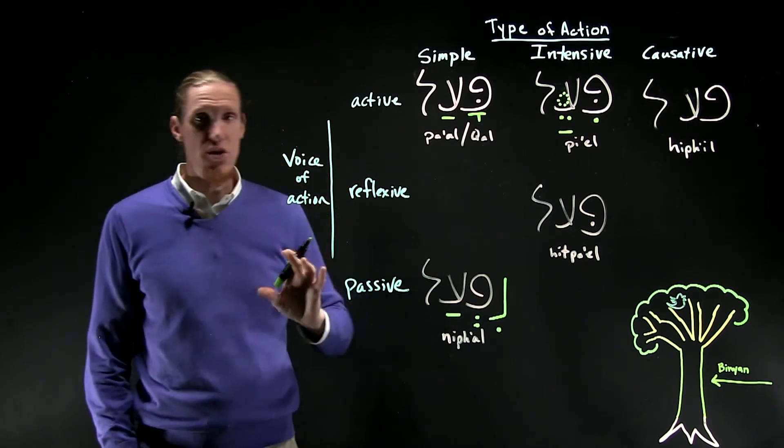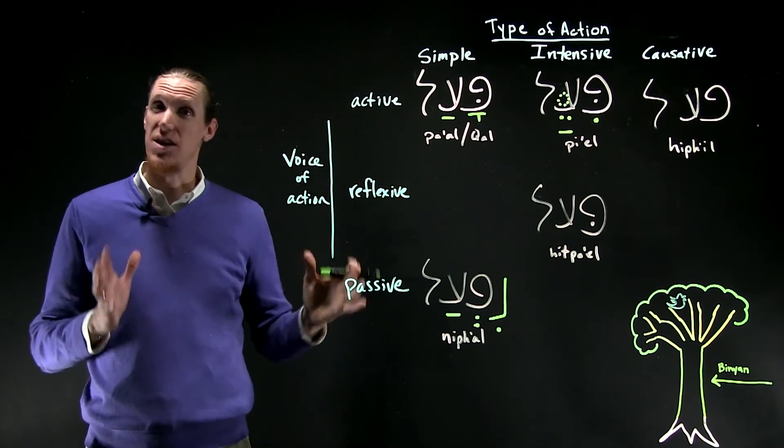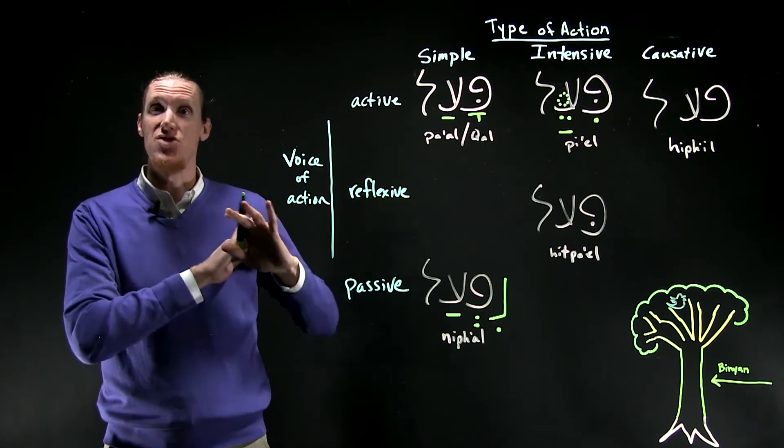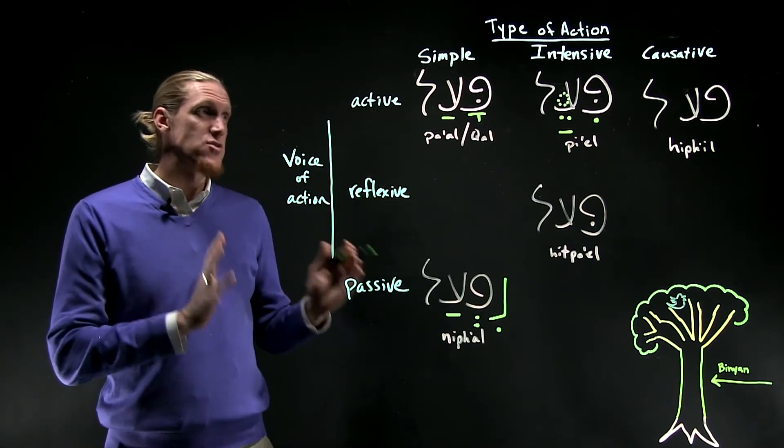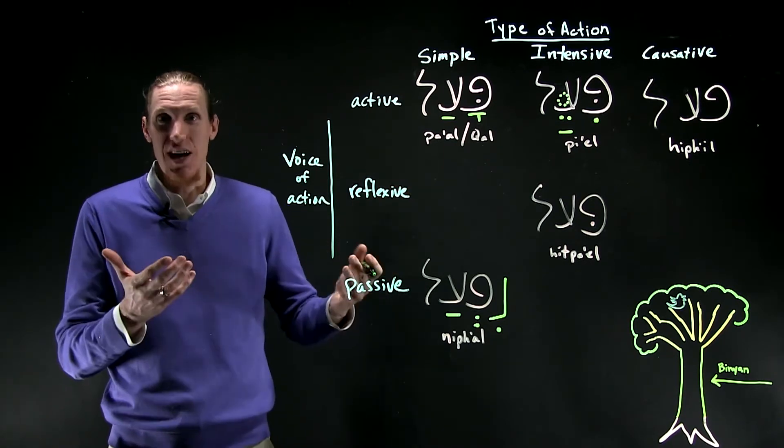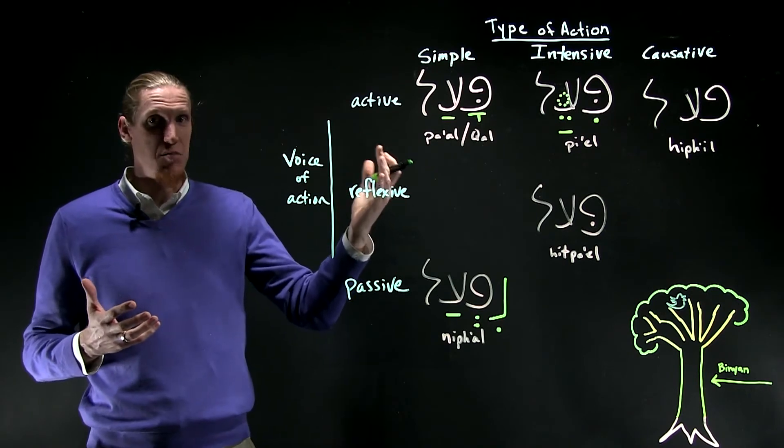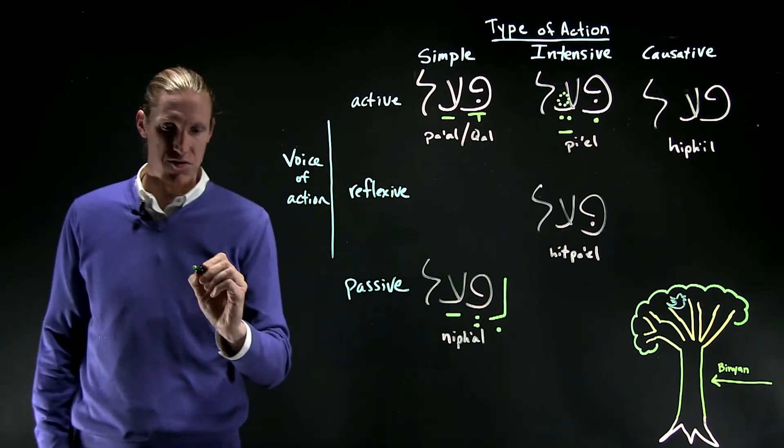Now the unfortunate thing of the choice of pe-ayin-lamed as the paradigmatic root is that the middle root letter is a guttural which rejects a dagesh. And so the example actually can't communicate the most common and most obvious sign of the pi'el. So I'll just write an example out for you here.